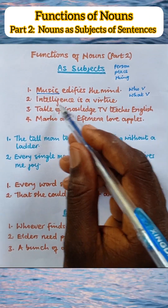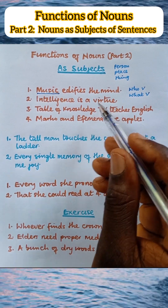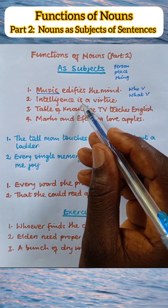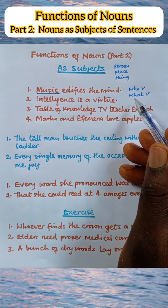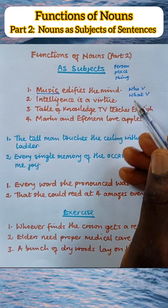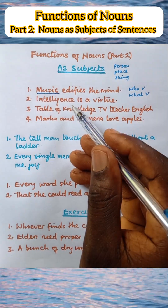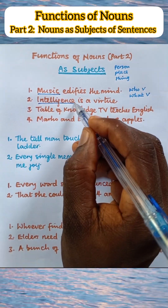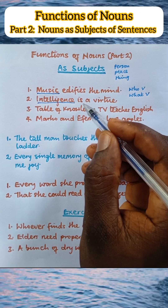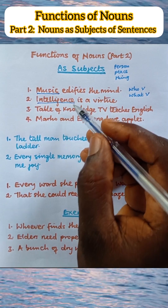Sentence 2: 'Intelligence is a virtue.' The verb here is 'is,' so we ask, 'What is a virtue?' The answer is 'intelligence.' So intelligence is the subject of this sentence, and intelligence, therefore, is a noun.